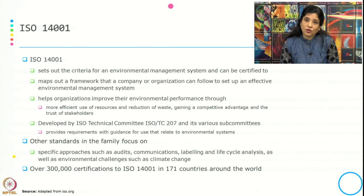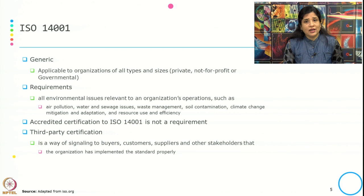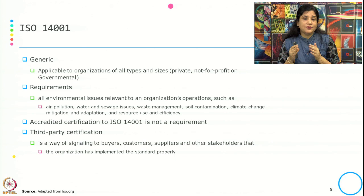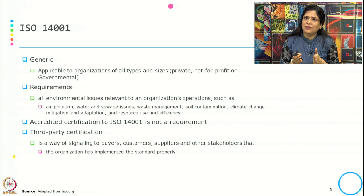ISO 14001 and also ISO 9001, which is associated with quality management practices, are both generic standards. They are applicable to organizations of all types and all sizes — whether private, not-for-profit, public, governmental, or regulatory. This is known as a generic standard.